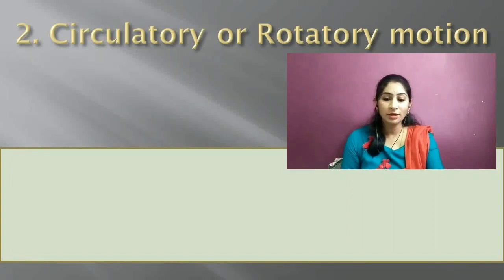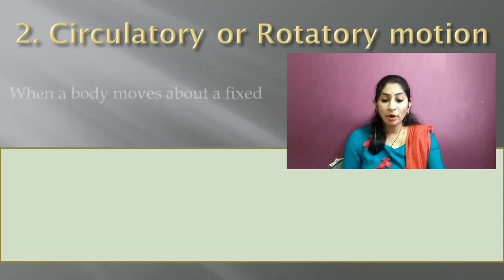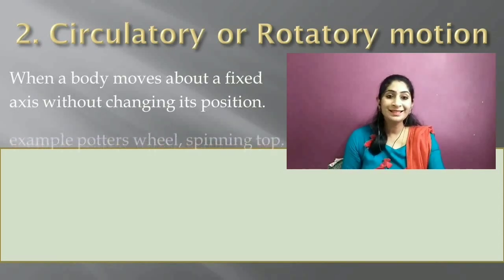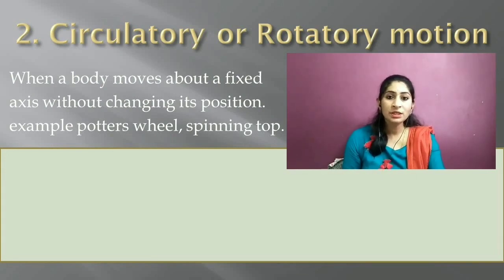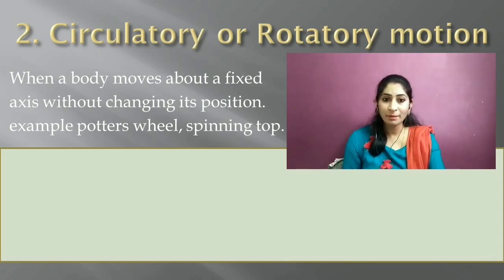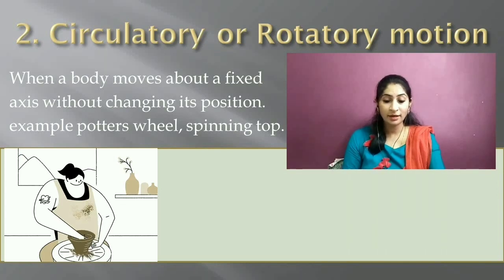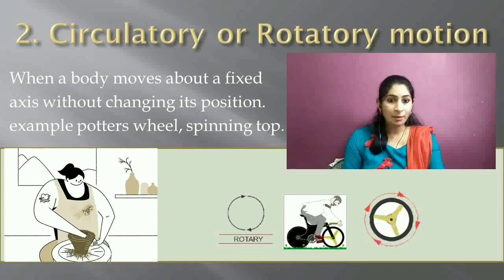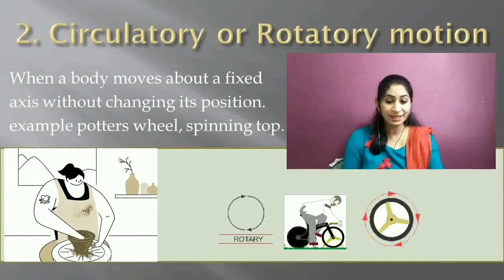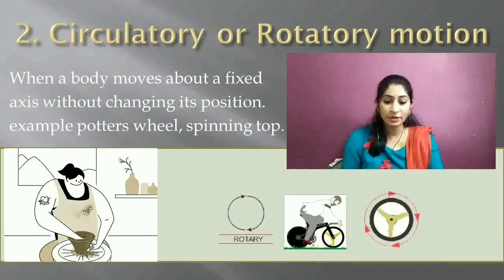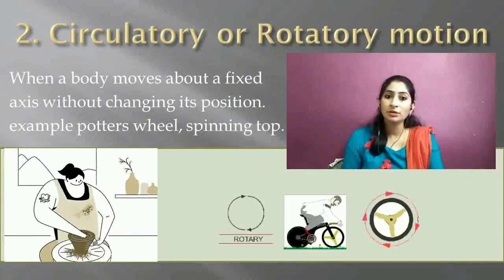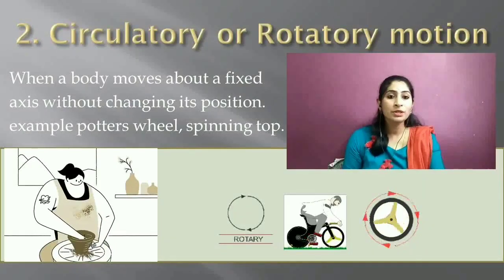The next type of motion is circulatory or rotatory motion. When a body moves about a fixed point without changing its position, it is said to be in circulatory or rotatory motion. For example, the blades of a ceiling fan move in a circle about a fixed point. Another example is a potter's wheel, which moves in a circle about a fixed point without changing its place. The spinning top is also an example — it moves about a fixed point without changing position.